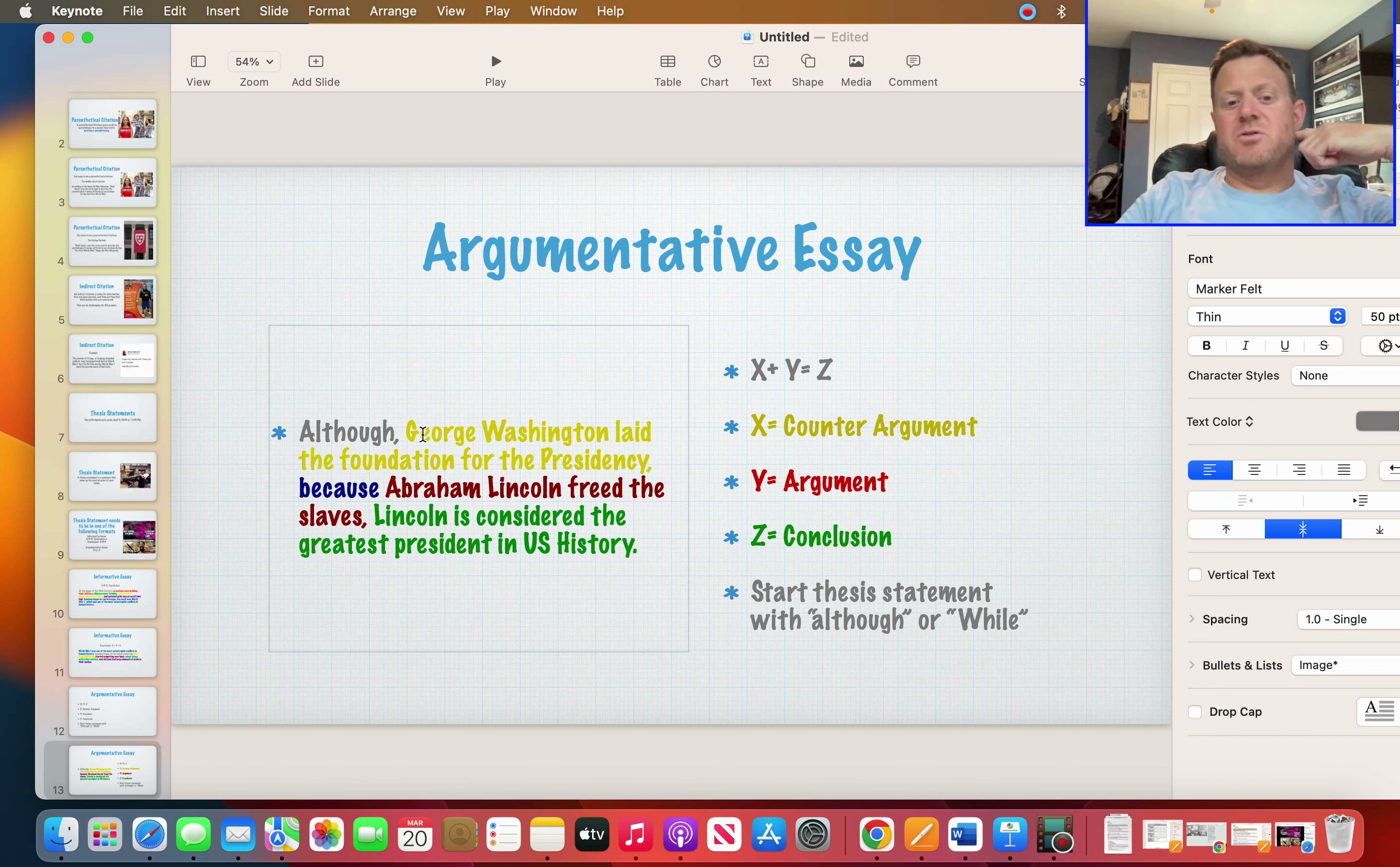Start with although or while. Although George Washington laid the foundation for the presidency, because Abraham Lincoln freed the slaves, Lincoln is considered the greatest president in U.S. history. So, once again, my counter argument is X. If you're doing an argumentative essay, the first thing you want to do is you want to hit them with the counter argument. George Washington laid the foundation for the presidency. A lot of people say George Washington is the greatest president. I don't really disagree with that. But in my case, my conclusion is that I actually think Lincoln was because he freed the slaves.